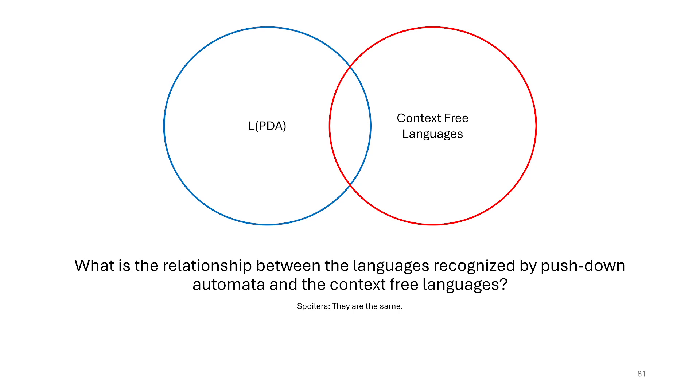Without having any indication, we don't really know how these two sets of languages might overlap. The context-free languages we've defined in a previous video are those that are generated by context-free grammars. We spent the last couple videos talking about pushdown automata and the relative power of these two machines is still an open question.